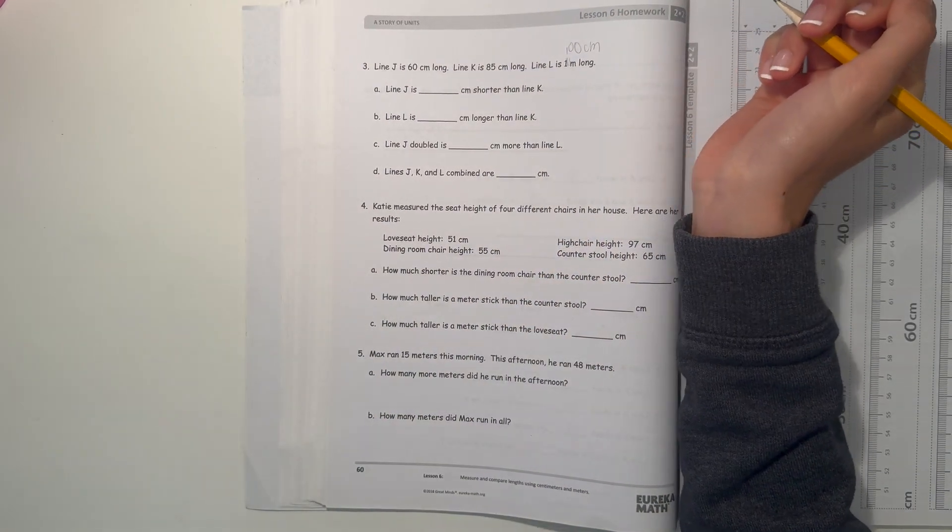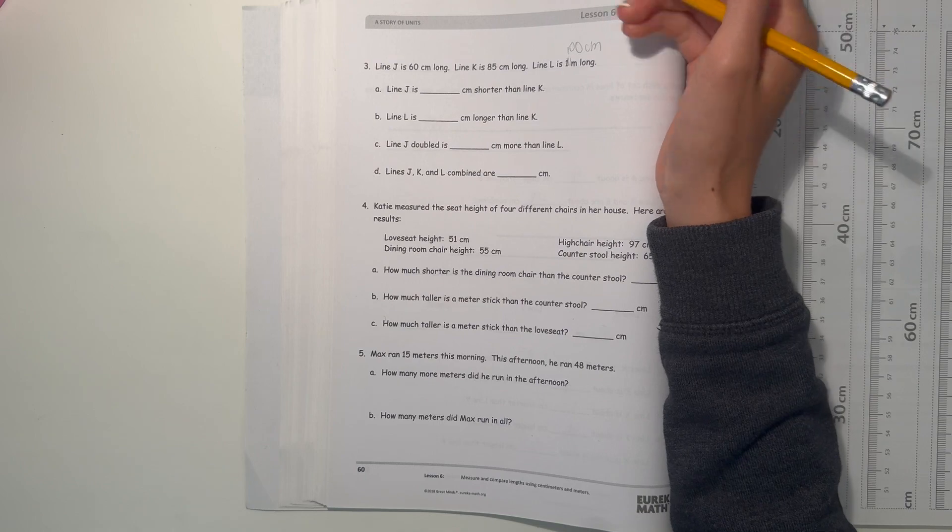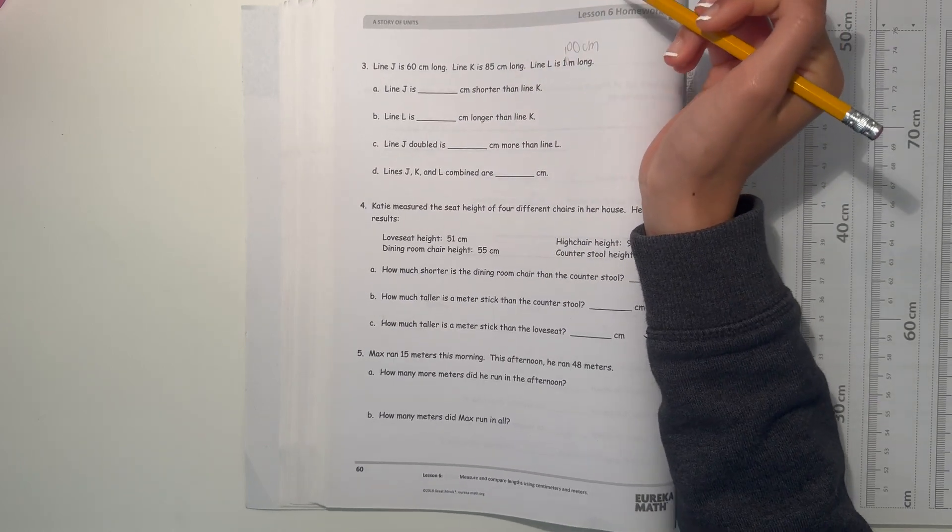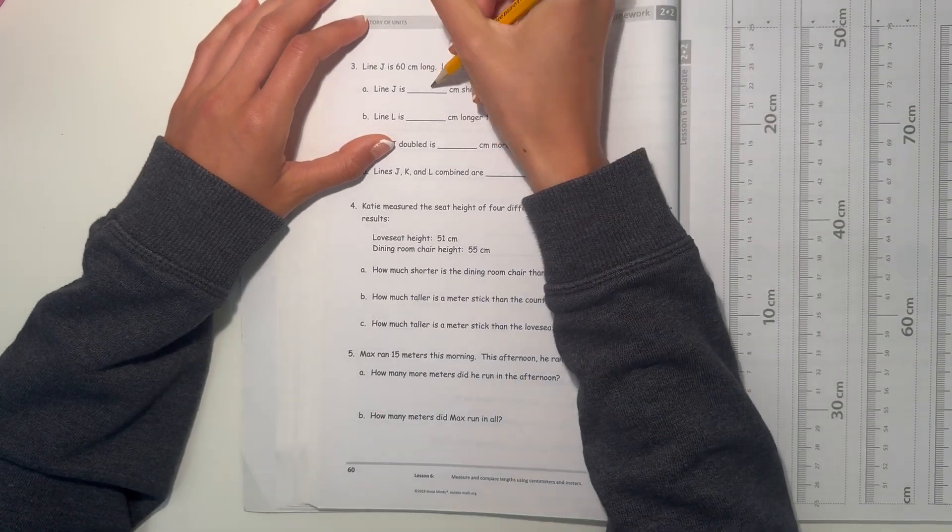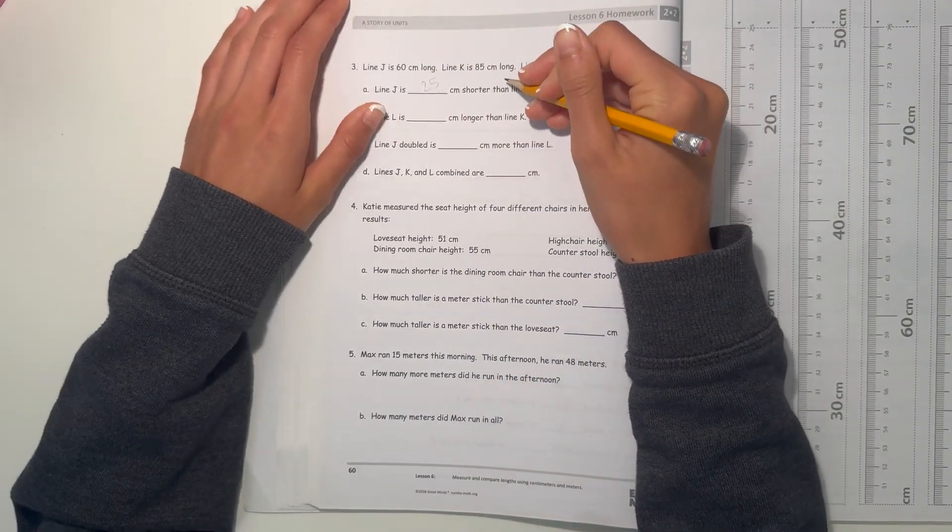So line J is blank centimeters shorter than line K. So 85 minus 60, 8 tenths minus 6 tenths, that's 25. So line J is 25 centimeters shorter than line K.